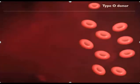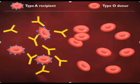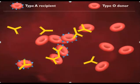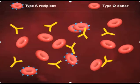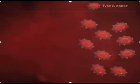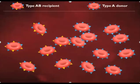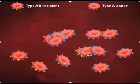Persons who are Type O lack A and B antigens on their red blood cell surfaces and are therefore universal donors. Persons with Type AB blood lack antibodies against A or B antigens and are therefore universal recipients.